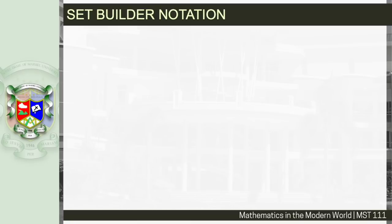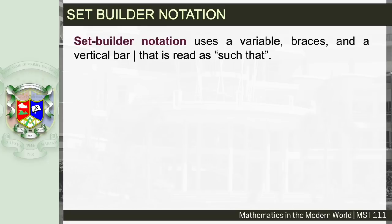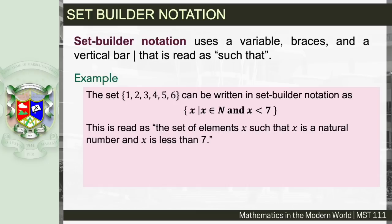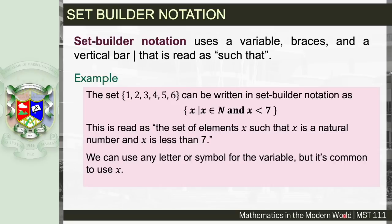Set builder notation uses a variable, braces, and a vertical bar that is read as 'such that.' For example, the set {1, 2, 3, 4, 5, 6} can be written in set builder notation as {x | x ∈ N and x < 7}, read as 'the set of all x such that x is a natural number and x is less than 7.' It is common to use x as the variable for an element of a set.